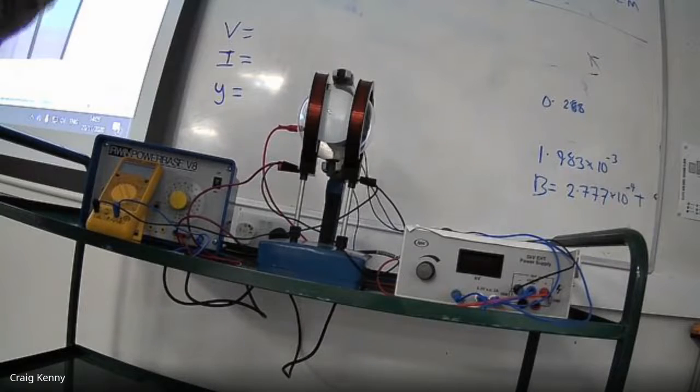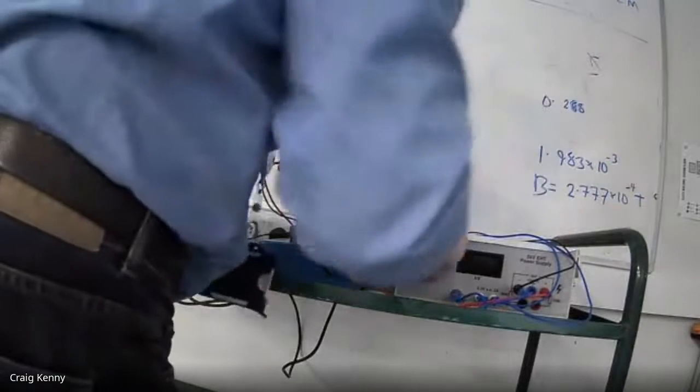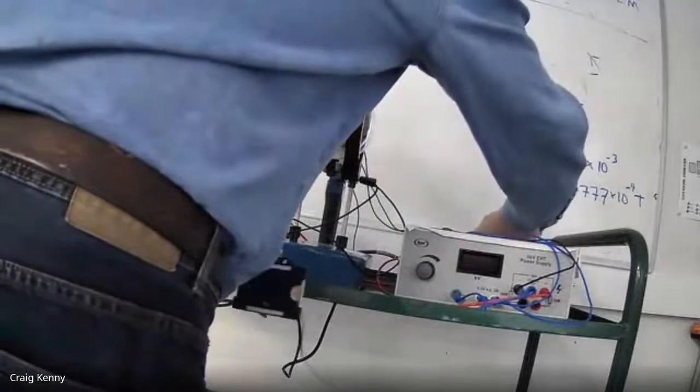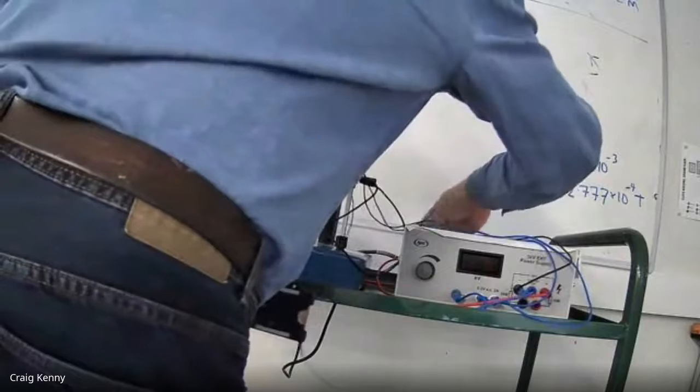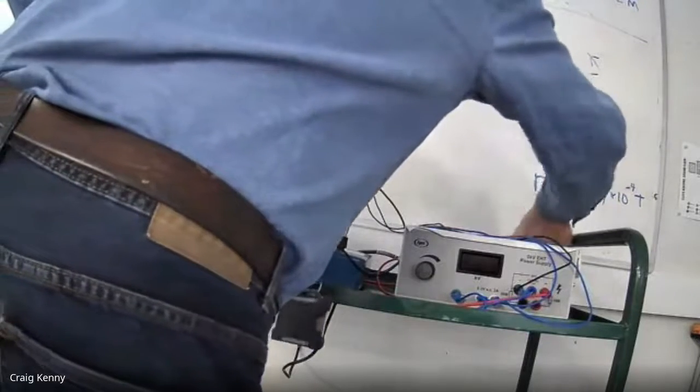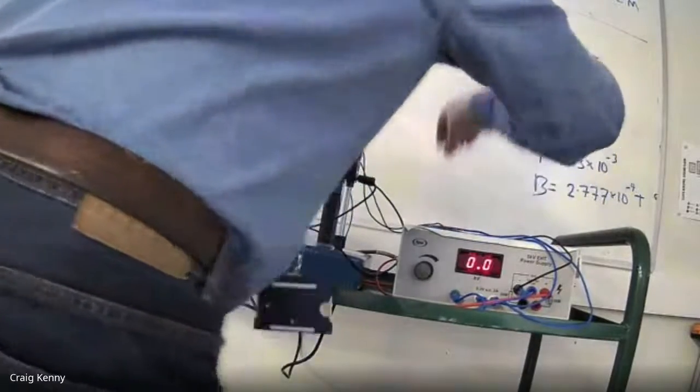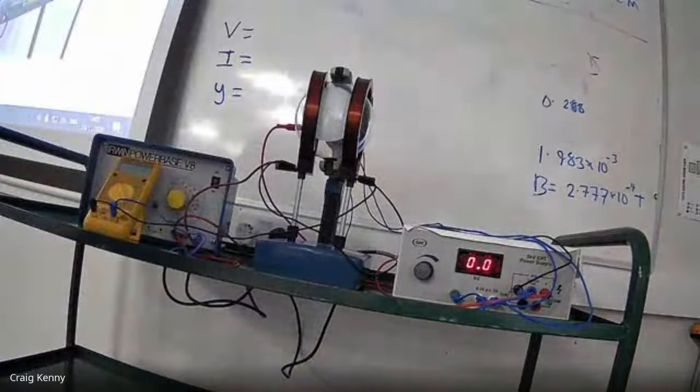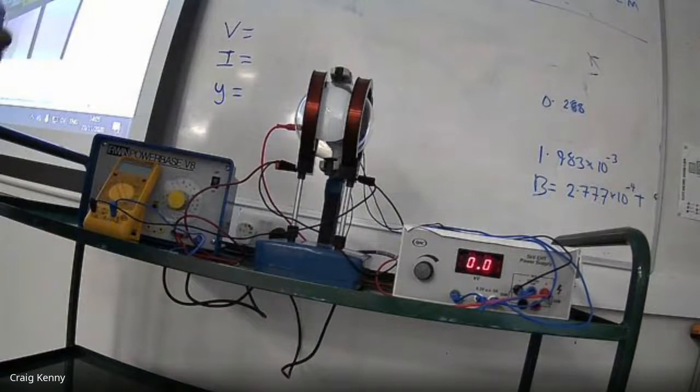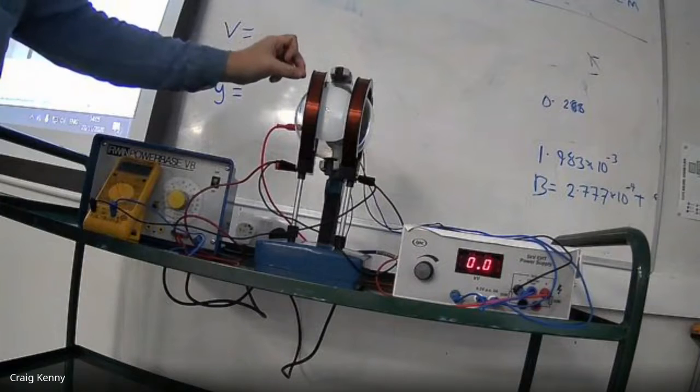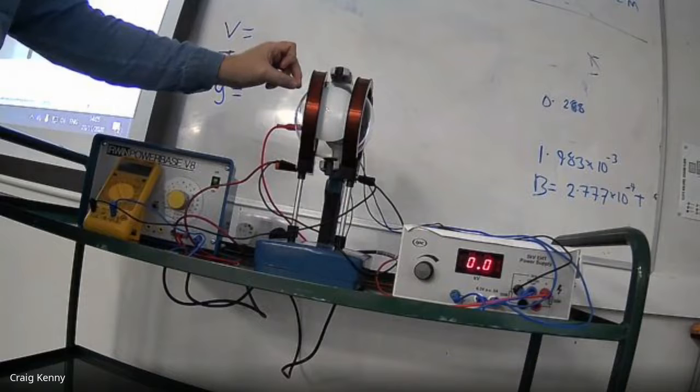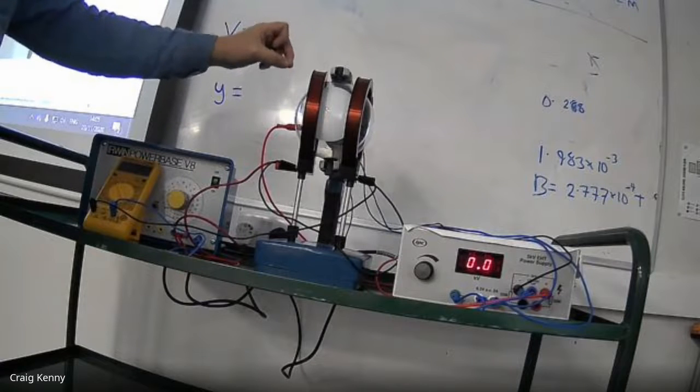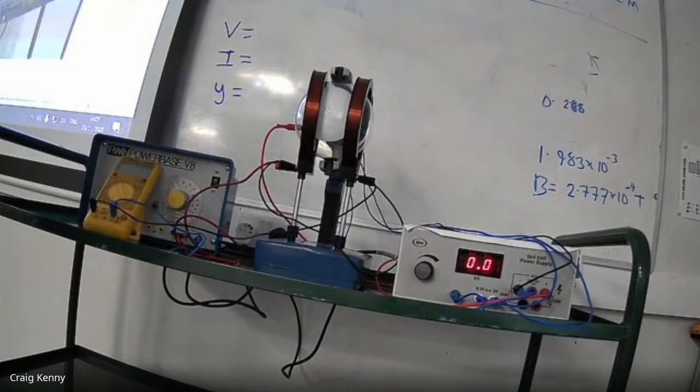So let's do this, take the measurements here. I'm going to turn the box on here. Now I need to allow this to warm up in order to produce thermionic emission of electrons before I accelerate them.